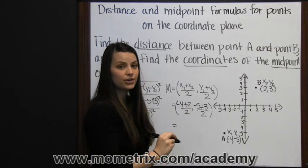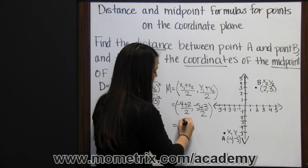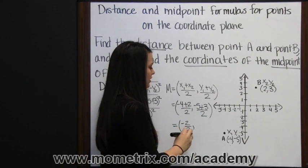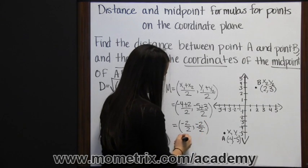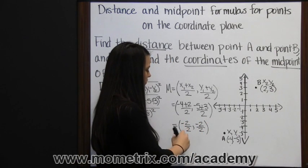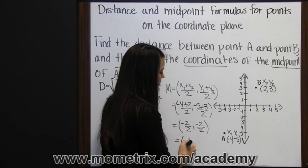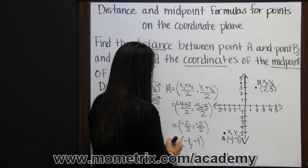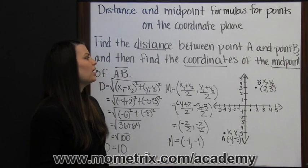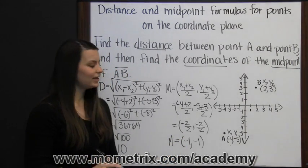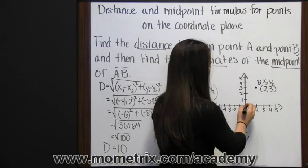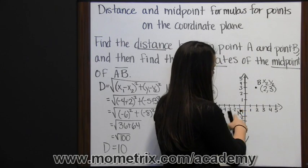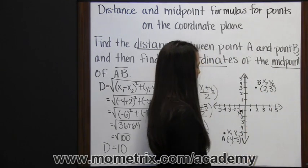Negative 4 plus 2 is negative 2, divided by 2 gives negative 1. Negative 5 plus 3 is negative 2, divided by 2 is also negative 1. So the coordinates of the midpoint of segment AB are negative 1, negative 1. This point is exactly in the middle of your segment AB.